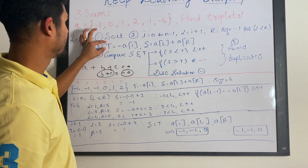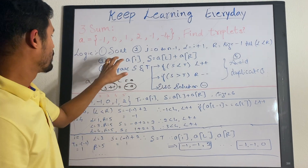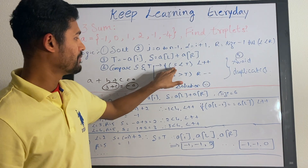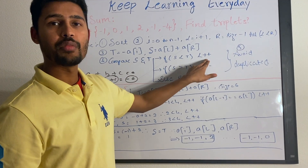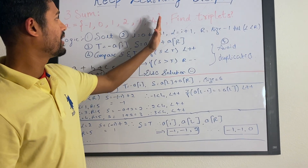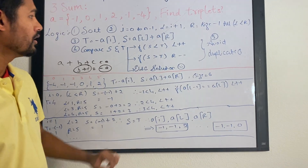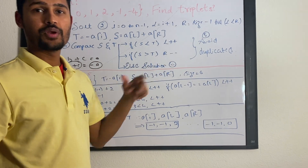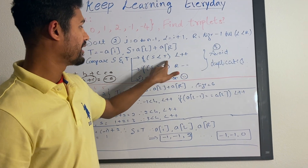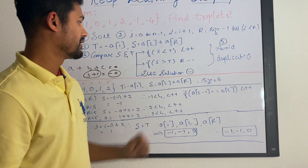Target T equals negative A[I], and sum equals A[L] plus A[R]. Once we have target and sum, we compare them with three cases: if sum is less than T, we increment L by one; if sum is greater than T, we decrement R by one; and if equal, we have a solution. To optimize and avoid duplicates, whenever we increment we can check if A[L-1] equals A[L], and if so, increment once more.